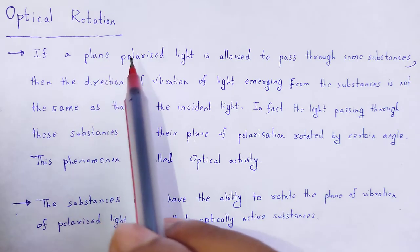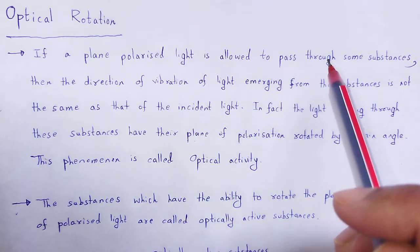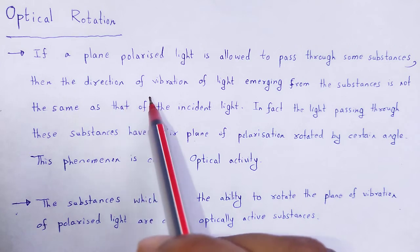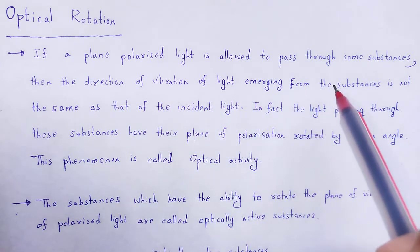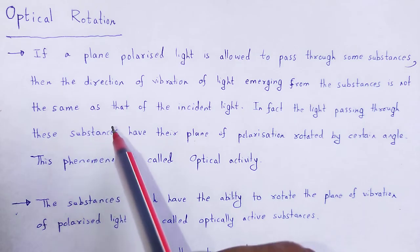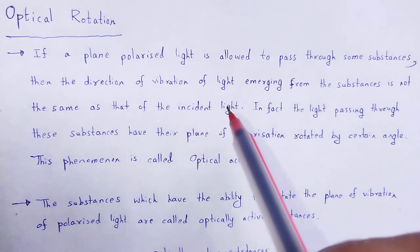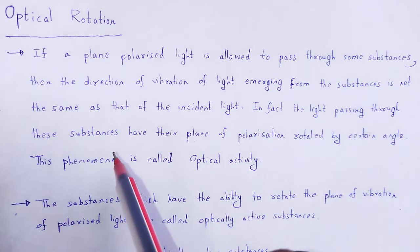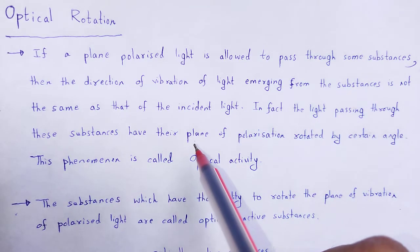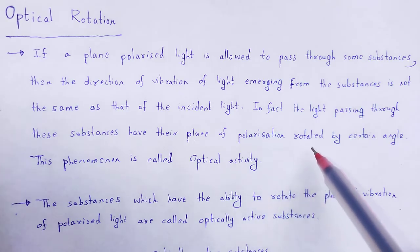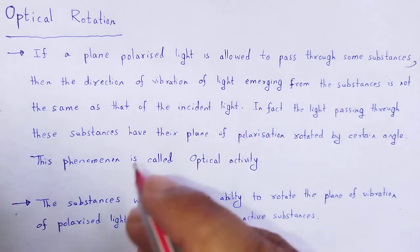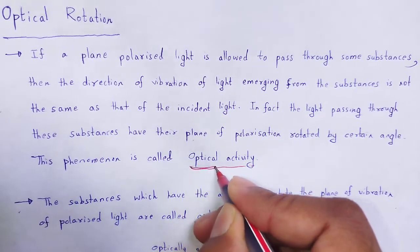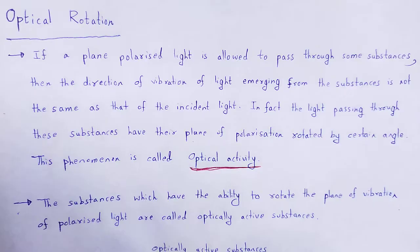What is optical rotation? If a plane polarized light is allowed to pass through some substances, then the direction of vibration of light emerging from the substances is not the same as that of the incident light. In fact, the light passing through these substances has its plane of polarization rotated by a certain angle, and this phenomenon is called optical activity.